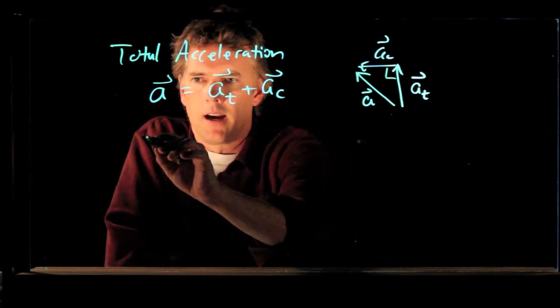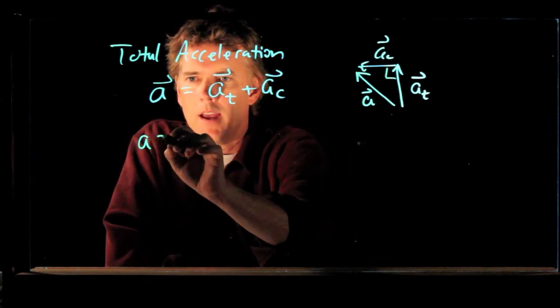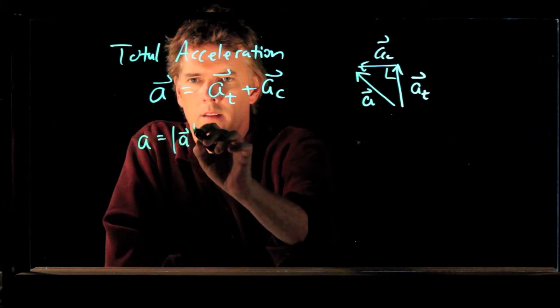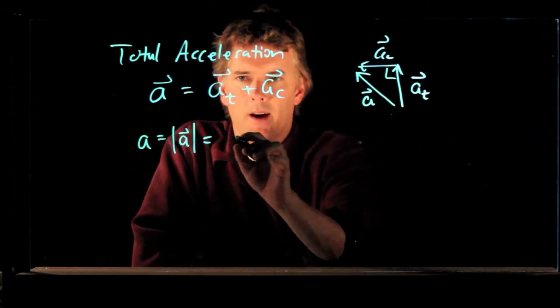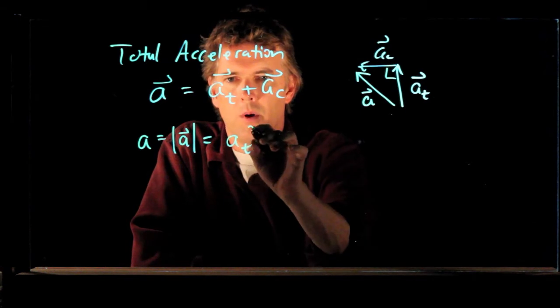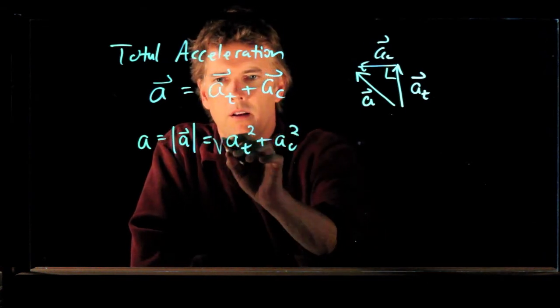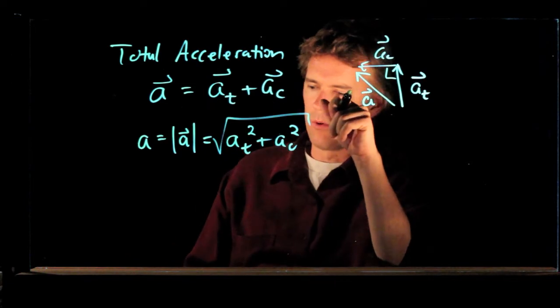So we can easily calculate the magnitude of a because this is a right triangle. So it's Pythagoras. So we have a t squared plus a c squared, all of that square rooted.